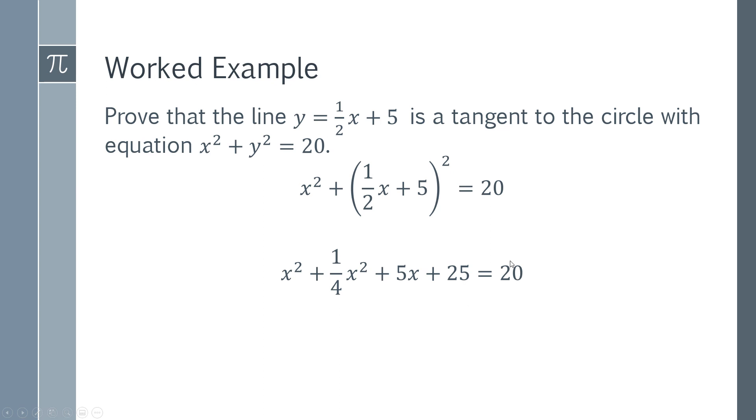Are we in the case where we've got two intersections, no intersections, or that single one point of intersection that shows that you've got a tangent? We can tidy that up by simply combining - we've got one x² here and 1/4 x², so we can combine that together. We can also take this 20 and move it to the other side, and this gives us a nice expression.